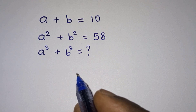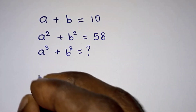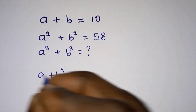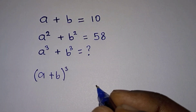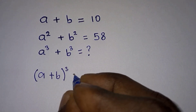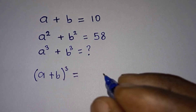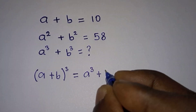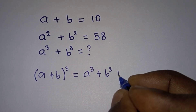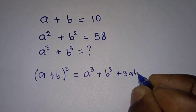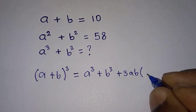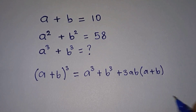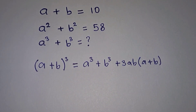For this question to be very simple for us, we need to figure out one algebraic identity. If we know that (a plus b) to the third power expands based on the identity, we are going to have a to the third power plus b to the third power plus three times ab times (a plus b).